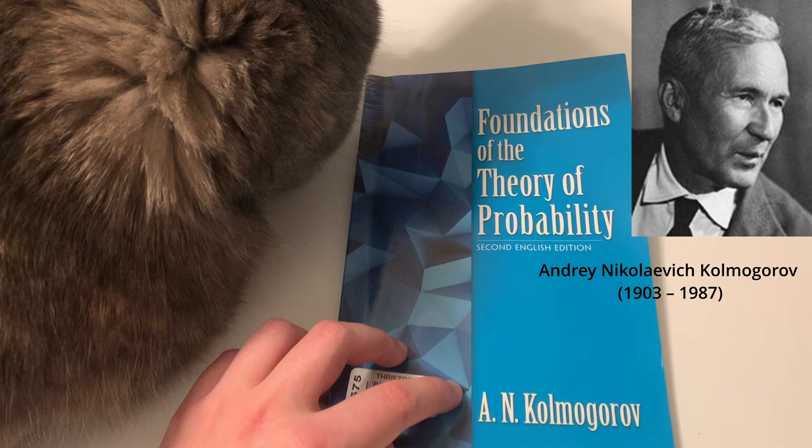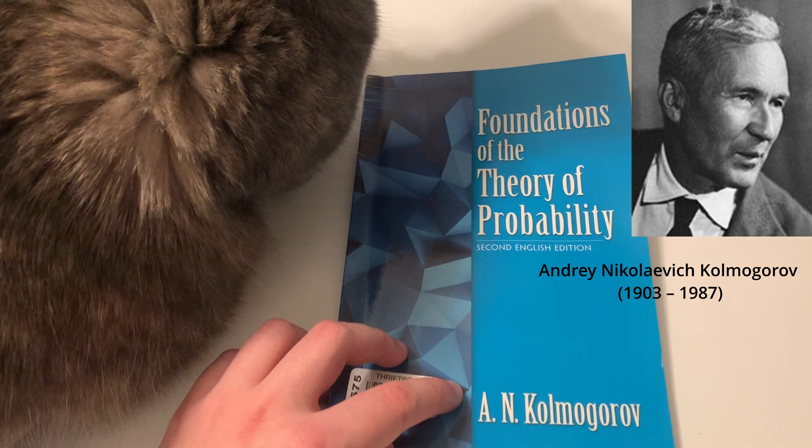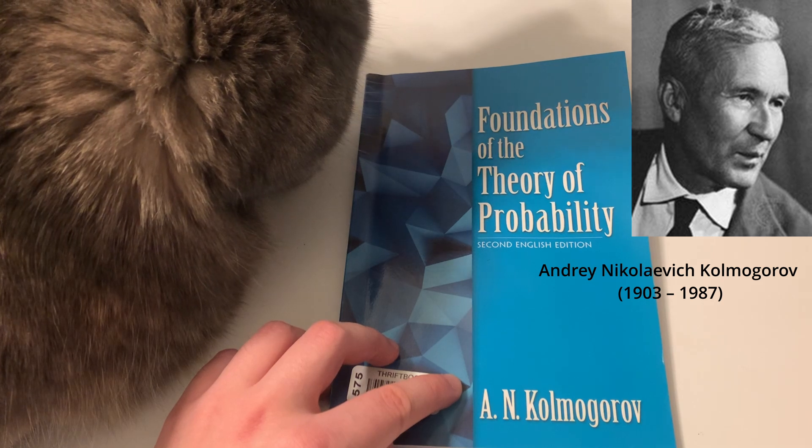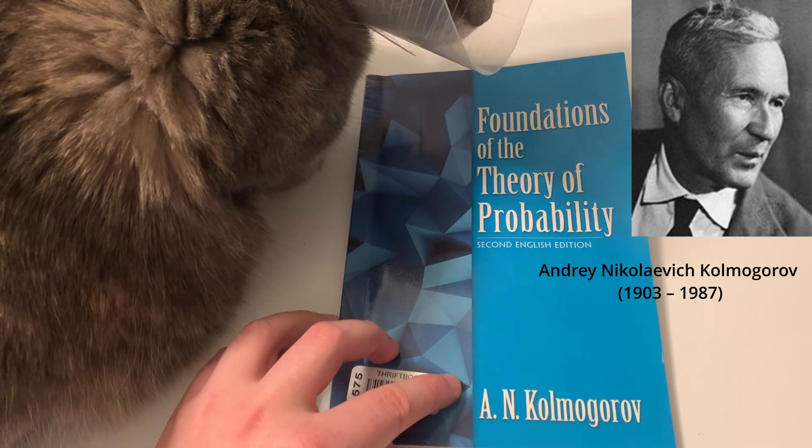In this fundamental work, Kolmogorov set out the fundamental axioms for modern probability theory. Of course, probability theory existed way before Kolmogorov.